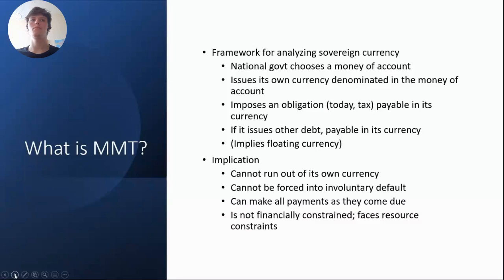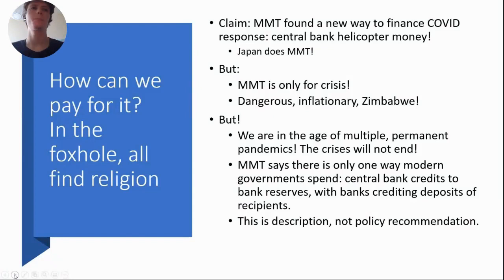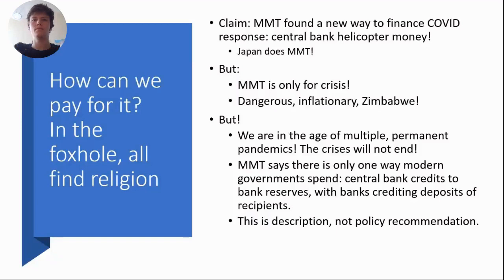The sovereign government can make all payments as they come due and is not financially constrained — it faces resource constraints but not financial constraints. It's somewhat humorous that in January 2020 every major policy maker around the world felt they had to condemn MMT and say they would never adopt it, and then in March, two months later, they all said they were going to embrace MMT because MMT found a new way to finance their COVID response — central bank helicopter money — and they pointed to Japan as an example.